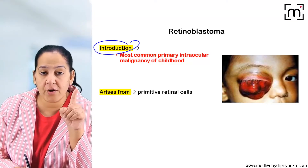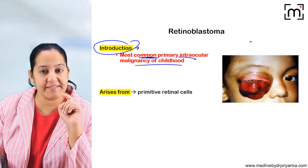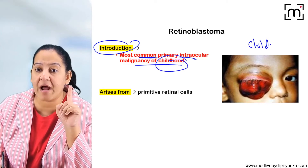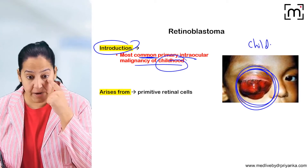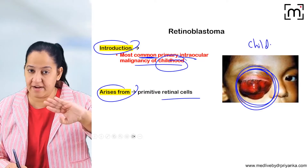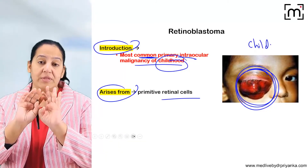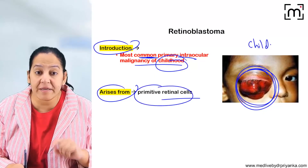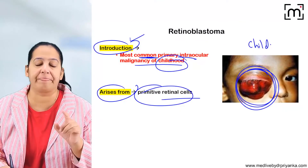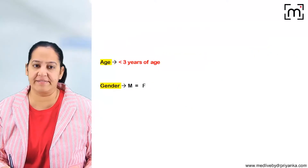Retinoblastoma is one of the most common primary intraocular malignancies of childhood. It arises from primitive retinal cells. The eye is a three-dimensional sphere, and the innermost layer is the retina. So retinoblastoma arises from the primitive retinal cells. To summarize the introduction: it is the most common primary intraocular malignancy in children, arising from primitive retinal cells.